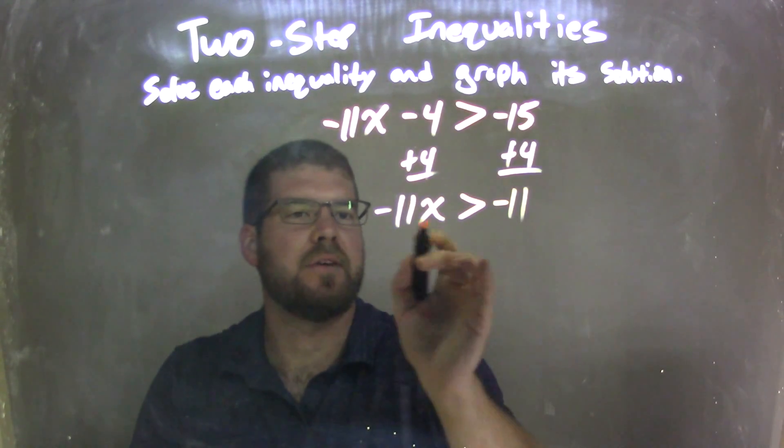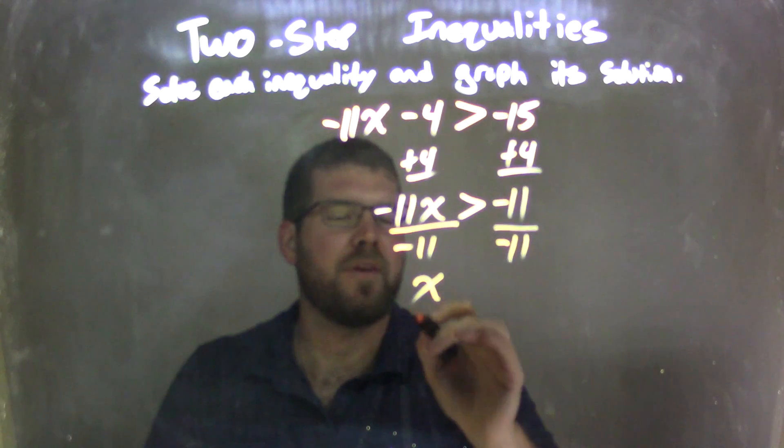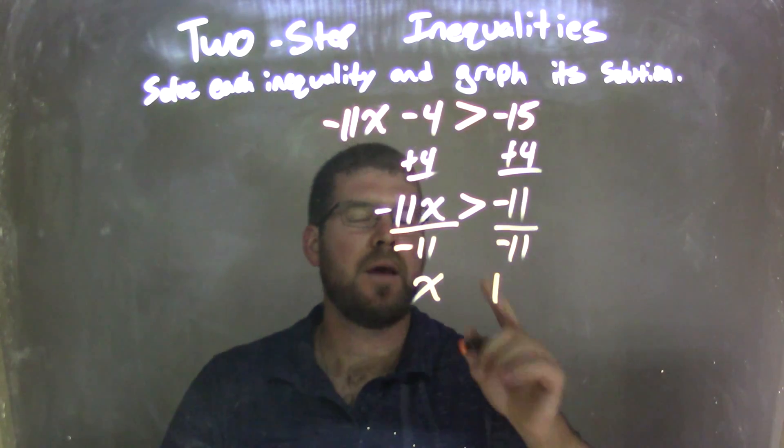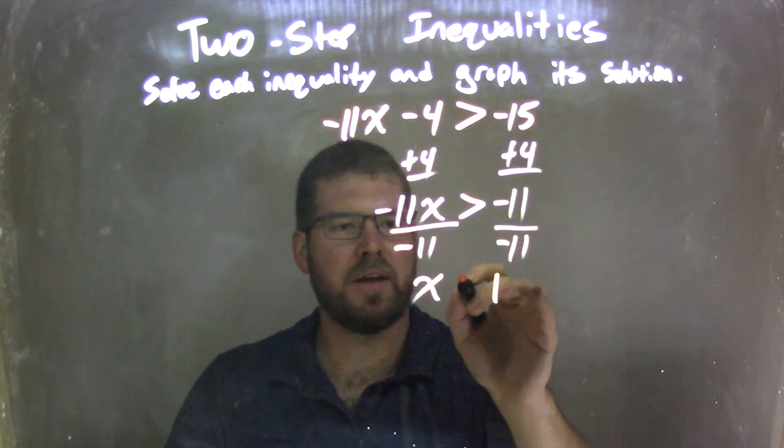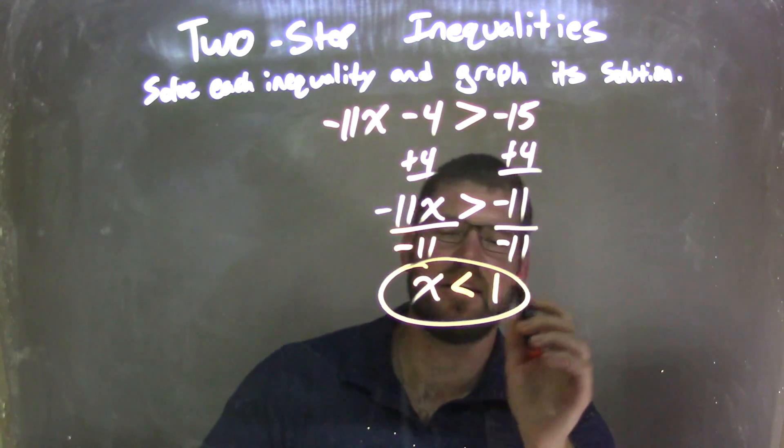So now I have to get x isolated. Divide by negative 11 on both sides, that gives me a positive x on the left. Negative 11 divided by negative 11 is a positive 1, but I divided by a negative over the inequality. So that greater than sign turns into a less than sign, and so now we have x isolated, and it's less than 1.